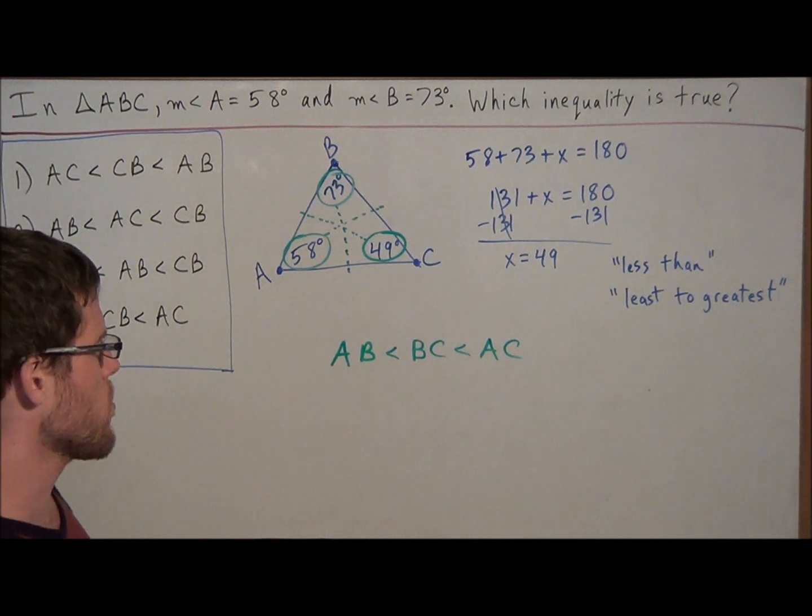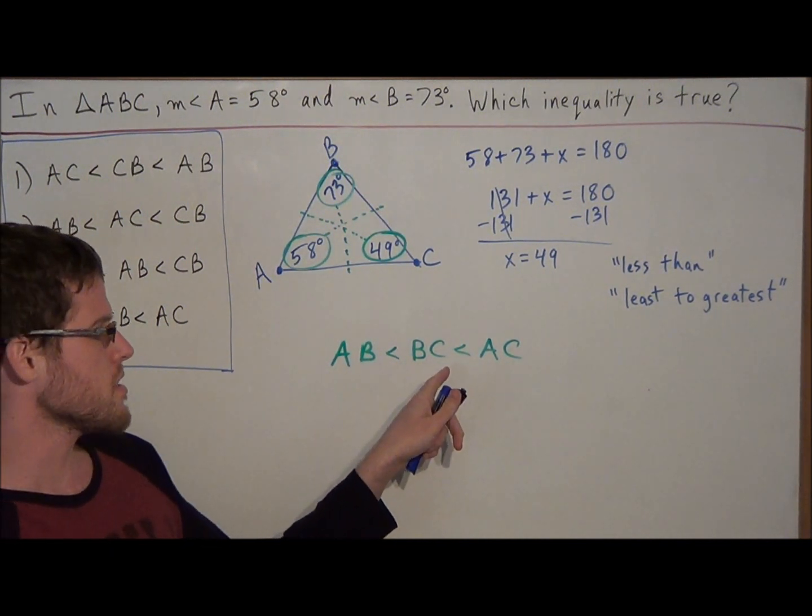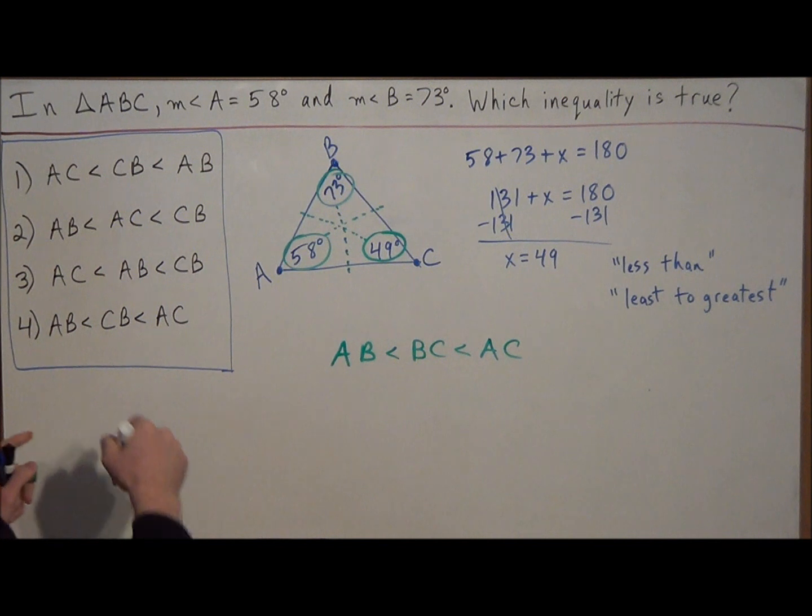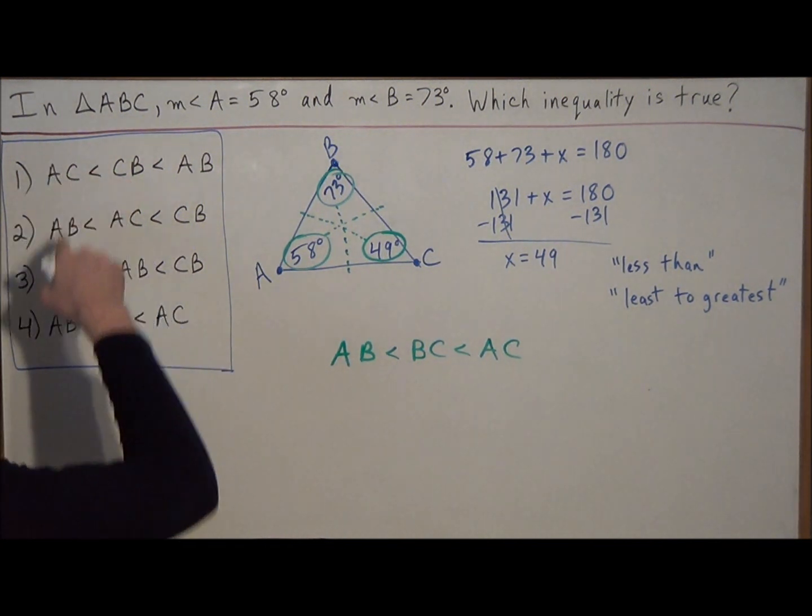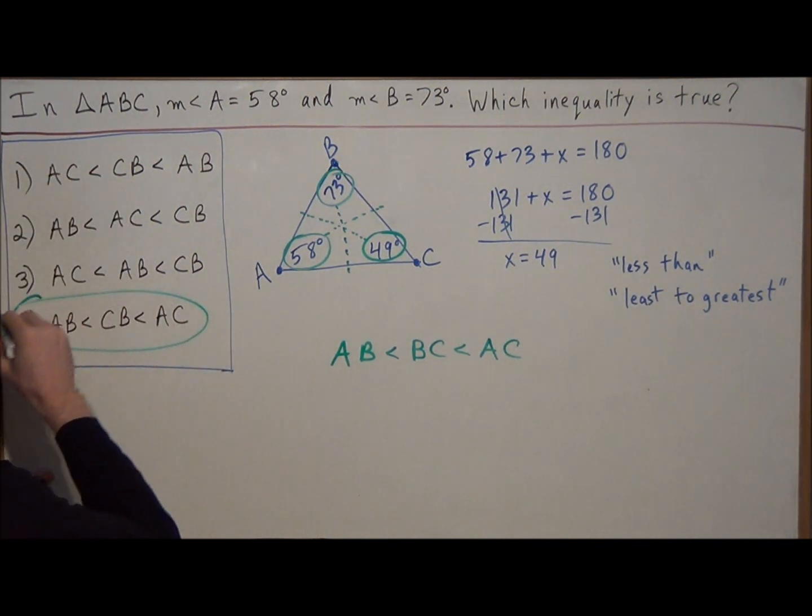Which tells us that the order of the sides is that AB is less than BC, which is less than AC. So we go to our answer choices and notice that choice 4 matches what we just found.